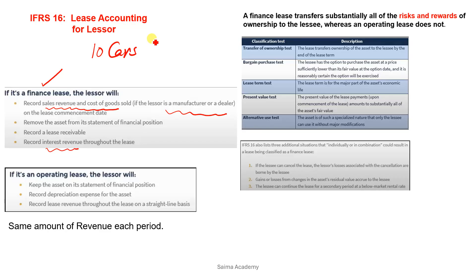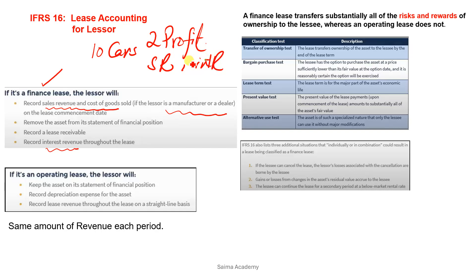Remember, in the case of the manufacturer Lessor, there are two types of profit: sales revenue and interest revenue. When we make the entry, we debit cost of goods sold and we reduce the inventory. So we remove the asset from the statement of financial position — the inventory car given on lease goes to the credit side and is removed. Then we record the lease receivable account.